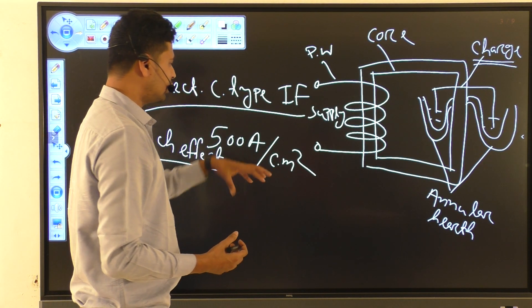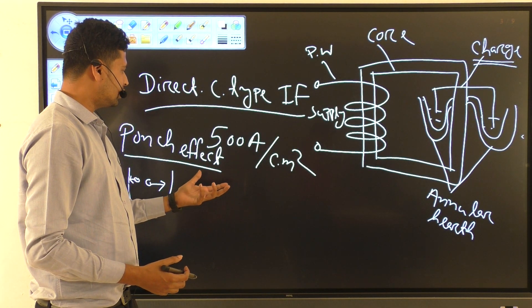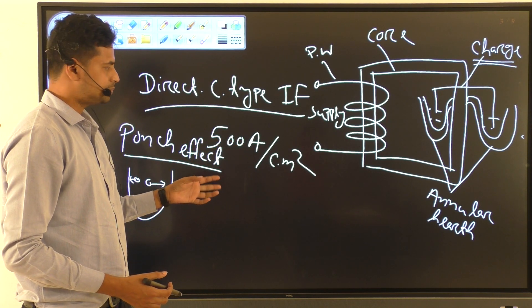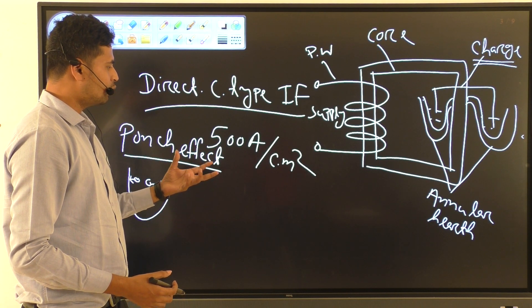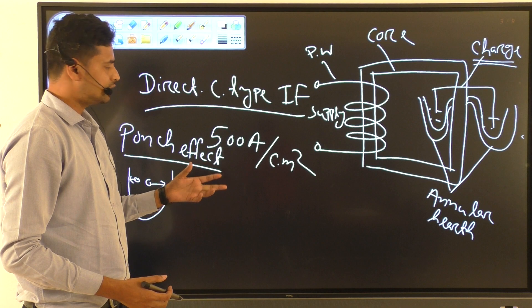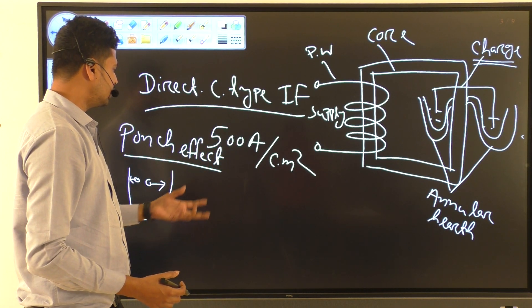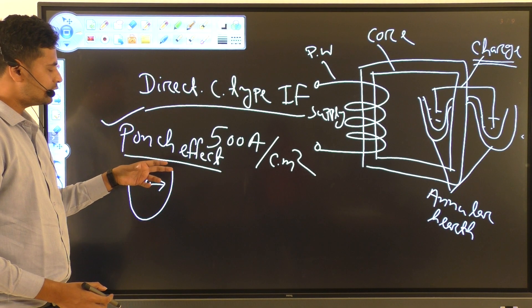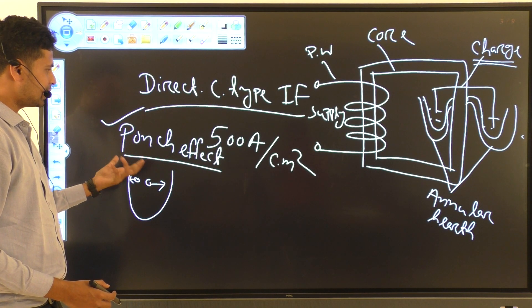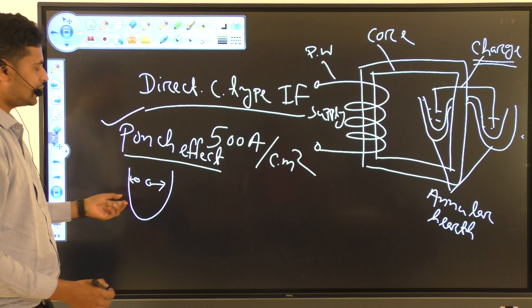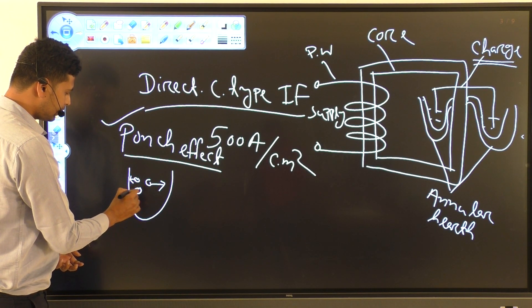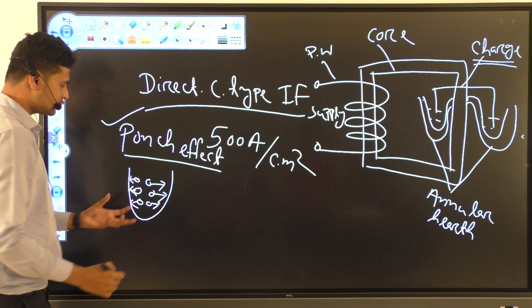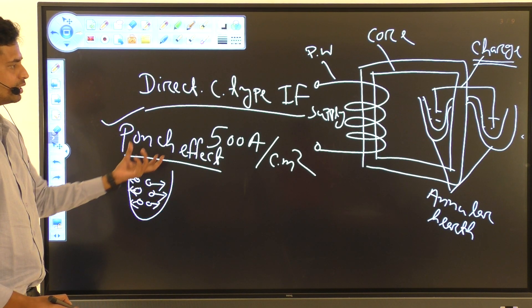The second demerit is that it cannot be operated at high frequency. If the current density is raised to around 500 amperes per centimeter square, it produces more reactance and the operation fails. This produces what is called the pinch effect. Due to high frequency and high reactance, the charges in the annular hearth are repelled from each other, and there is a risk of overflow of the molten metal from the annular hearth.